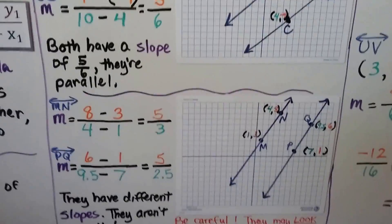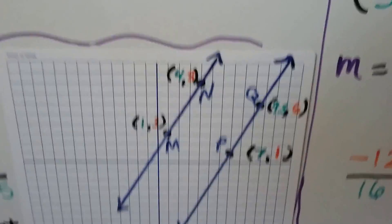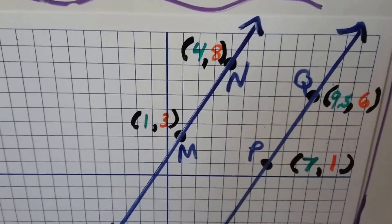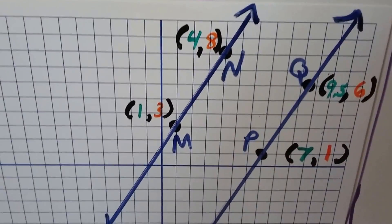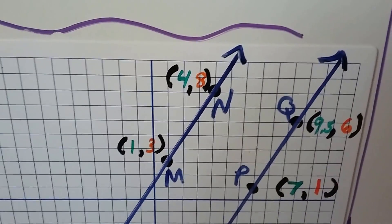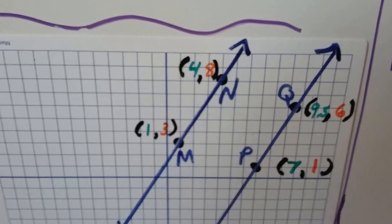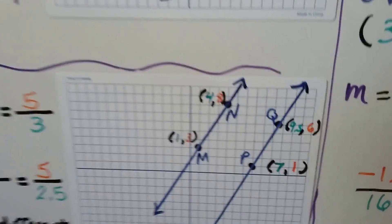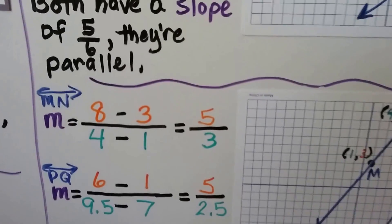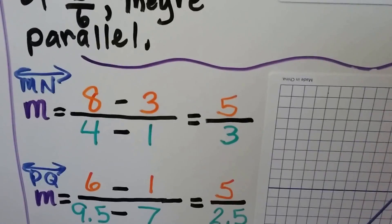Now take a look at this one. They kind of look parallel, don't they? We have line MN and it's got an x coordinate at M of 1 and y is 3. At N it's 4 for x and 8 for y. So we're going to do 8 - 3 over 4 - 1 for line MN. 8 - 3 is 5. 4 - 1 is 3. So we have a slope of 5/3.